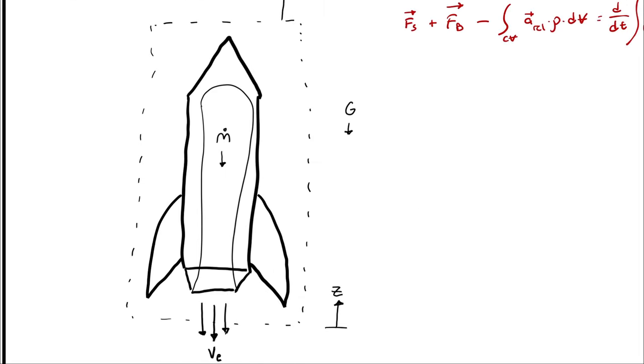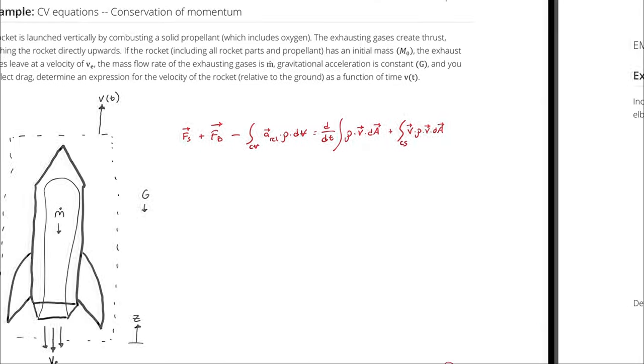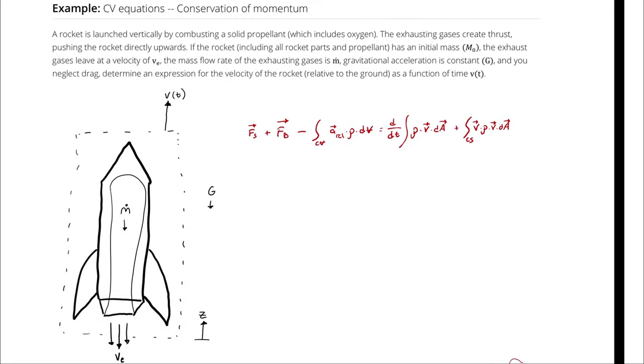We know our control volume is going to have a body force in the downward direction, that's the weight of the actual rocket. And then we can account for this new term by writing the acceleration, or relative acceleration here, as the velocity, the change in velocity of the rocket with respect to time.